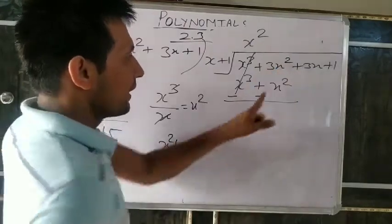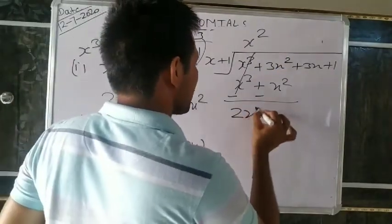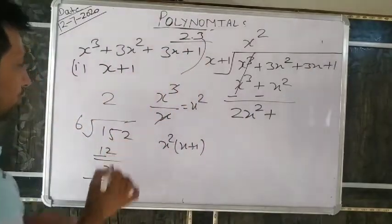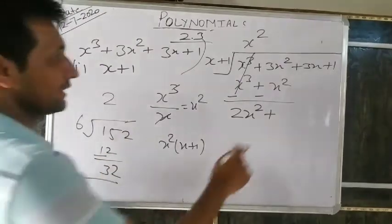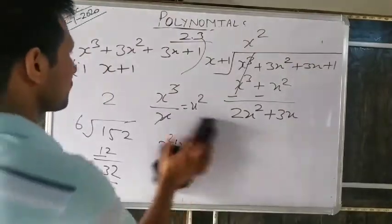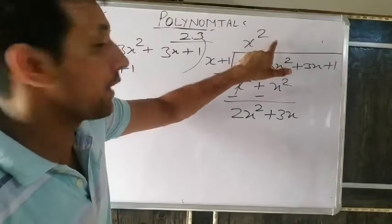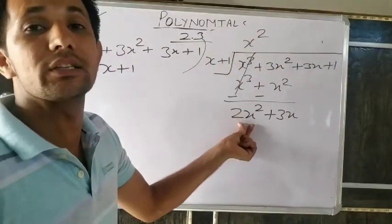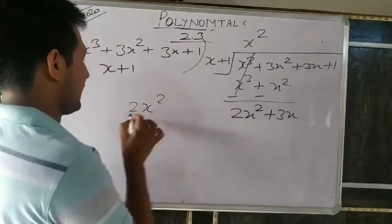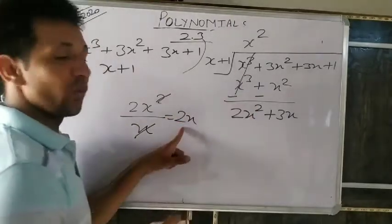Bring down the next term. Now 2x² remains. What number, when multiplied by x, gives 2x²? That is 2x. 2x² divided by x gives 2x. Write plus 2x in the quotient. Multiply: 2x times (x+1) gives 2x² and 2x. Change sign — both become negative.